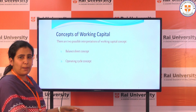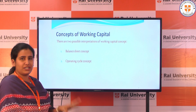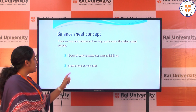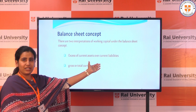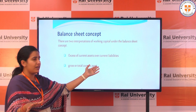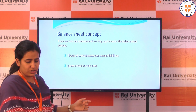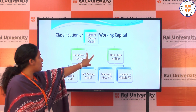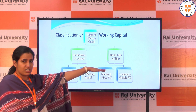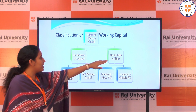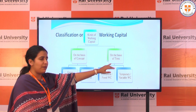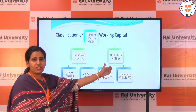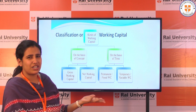Next, we have the concepts of working capital. There are two types: the balance sheet concept and the operating cycle concept. The balance sheet concept has two interpretations — the excess of current assets over current liabilities, and the gross or total current assets concept. On the basis of concept, we have gross working capital and net working capital. On the basis of time, we have permanent and temporary, also known as fluctuating working capital.